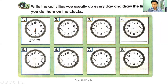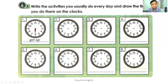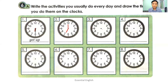Exercise 6A: Write the activities you usually do every day and draw the times on the clocks. For example, you get up at half past six. Please draw that time. Then at seven o'clock you have breakfast. At a quarter past eight you leave for school. These are just example answers — draw the times and write the activities as you like, depending on your own timetable.